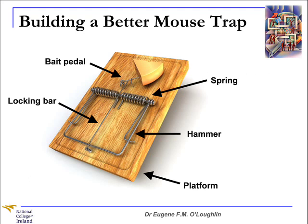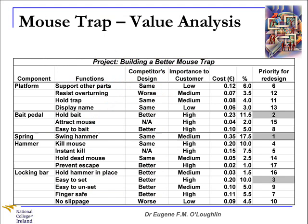Now let's take a look at a more complicated example. Ralph Waldo Emerson said, if you build a better mousetrap, people will beat a path to your door. So I'm going to use the mousetrap to illustrate in more detail how Value Analysis can be used. In our simple mousetrap, we have five main components: the locking bar, the bait pedal, the spring, the hammer, and the platform which everything is held on. Each of these components will have several functions.